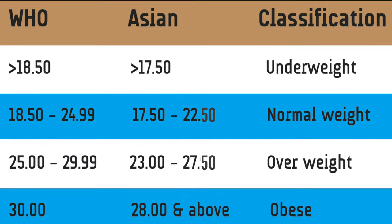For Asians as well as for Indians, the normal BMI range varies from 17.5 to 22.5. If you are above 22.5 and up to 27.5, you fall into the overweight category.